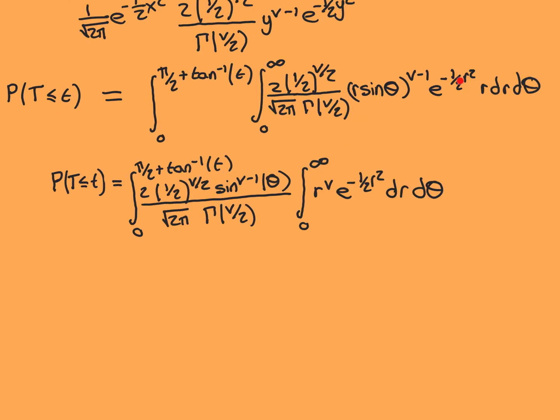This is the CDF for our random variable T. You might think our next step is to differentiate this with respect to T to get the PDF. We won't do that just yet — we'll first simplify, because the first fundamental theorem of calculus only applies to one integral. So we want to reduce this to a single integral by first doing the r integral, then applying differentiation to the theta integral using the first fundamental theorem.